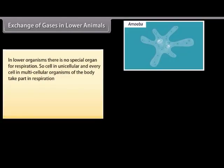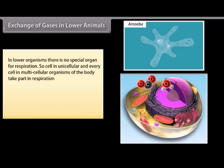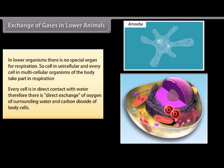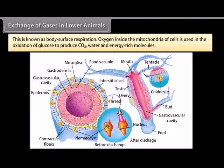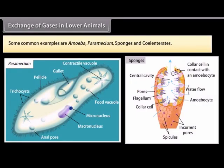In lower organisms, there is no special organ for respiration. Every cell in unicellular organisms and every cell in multicellular organisms takes part in respiration. Every cell is in direct contact with water, so there is direct exchange of oxygen from surrounding water and carbon dioxide from body cells — this is known as body surface respiration. Oxygen inside the mitochondria of cells is used in the oxidation of glucose to produce CO2, water, and energy-rich molecules. Common examples are amoeba, paramecium, sponges, and coelenterates.